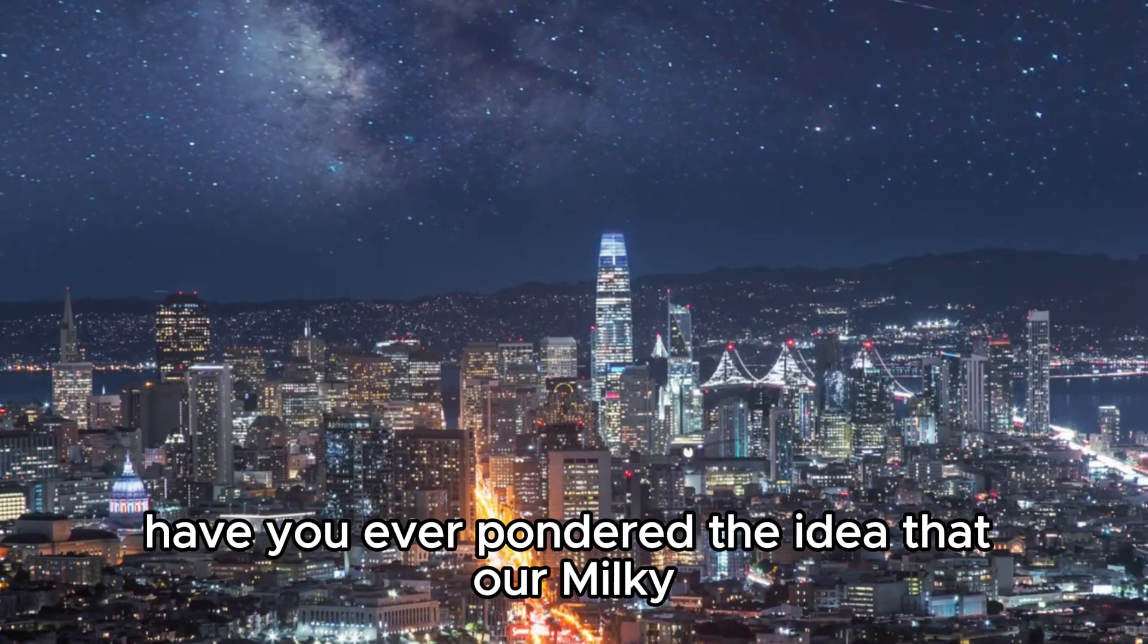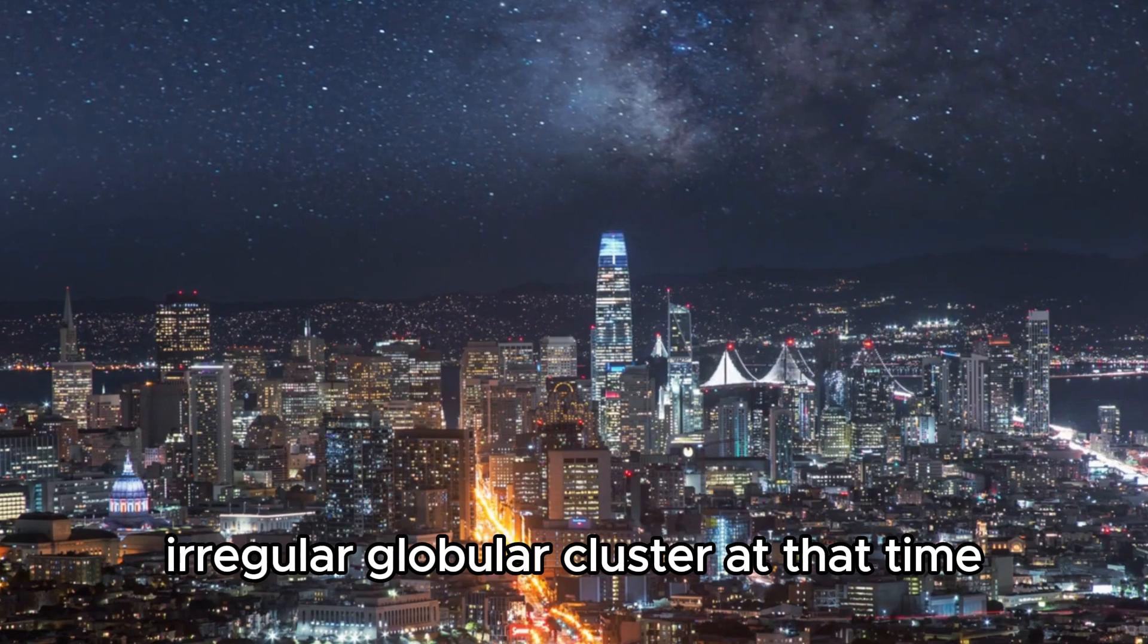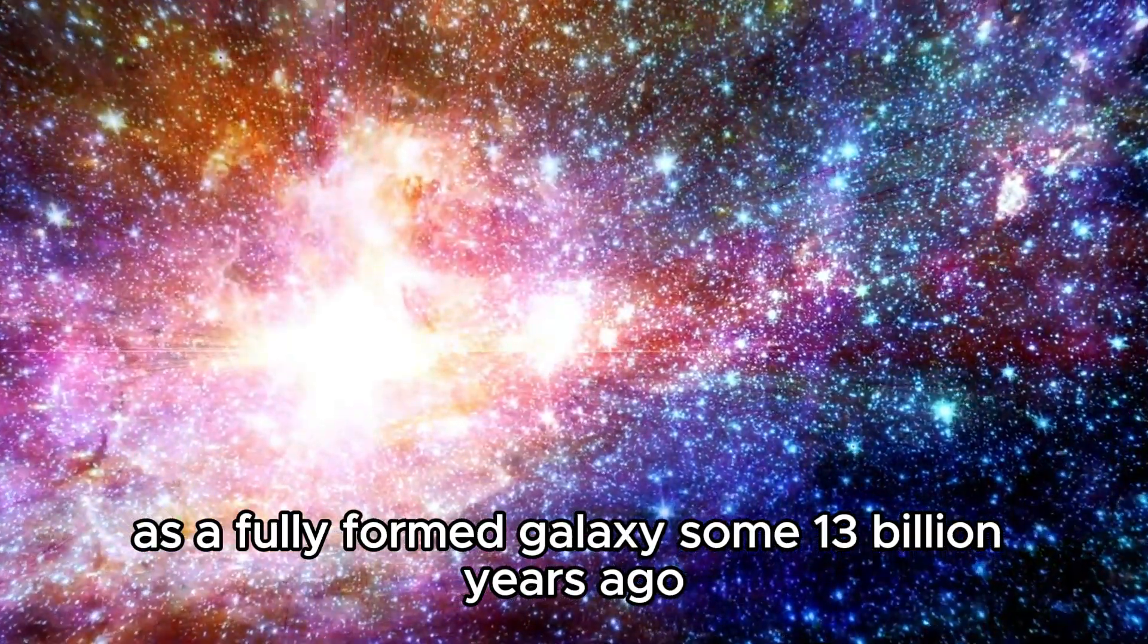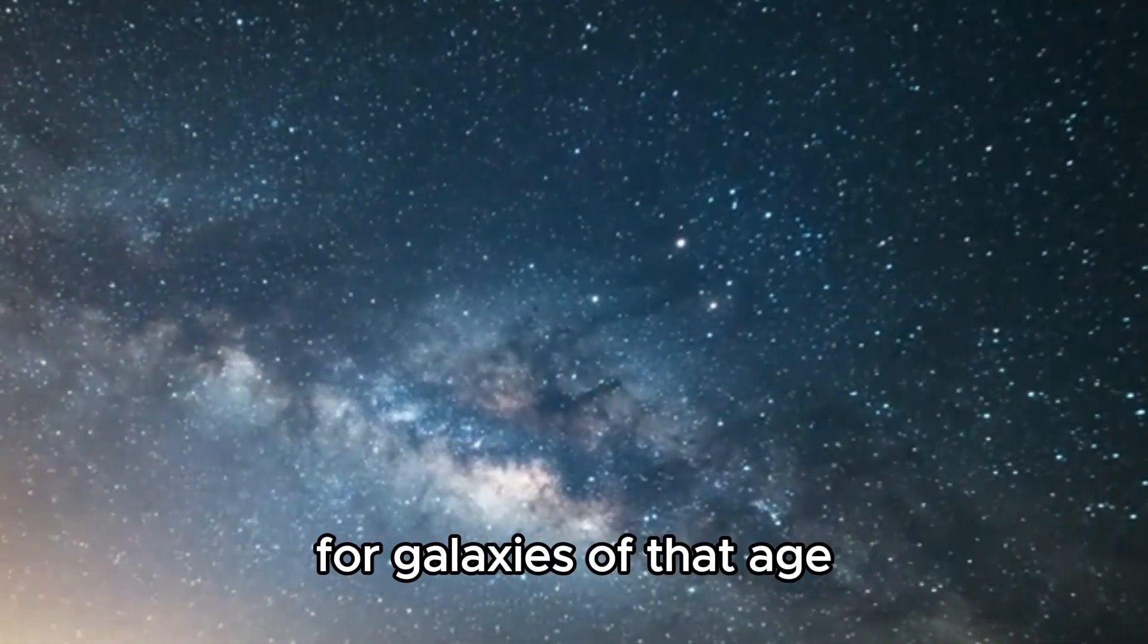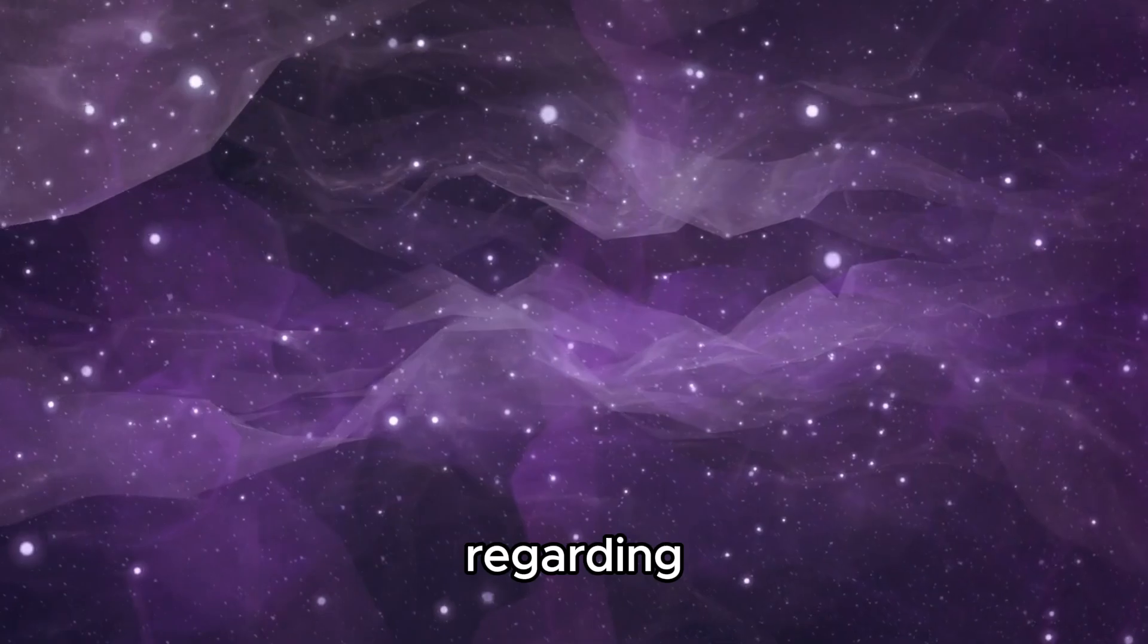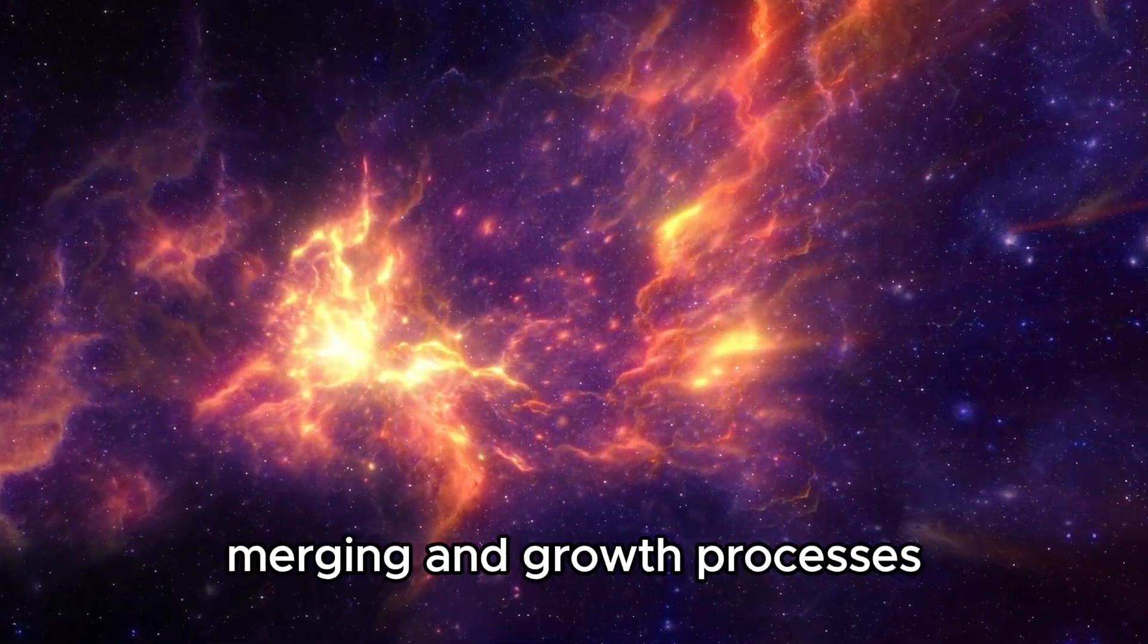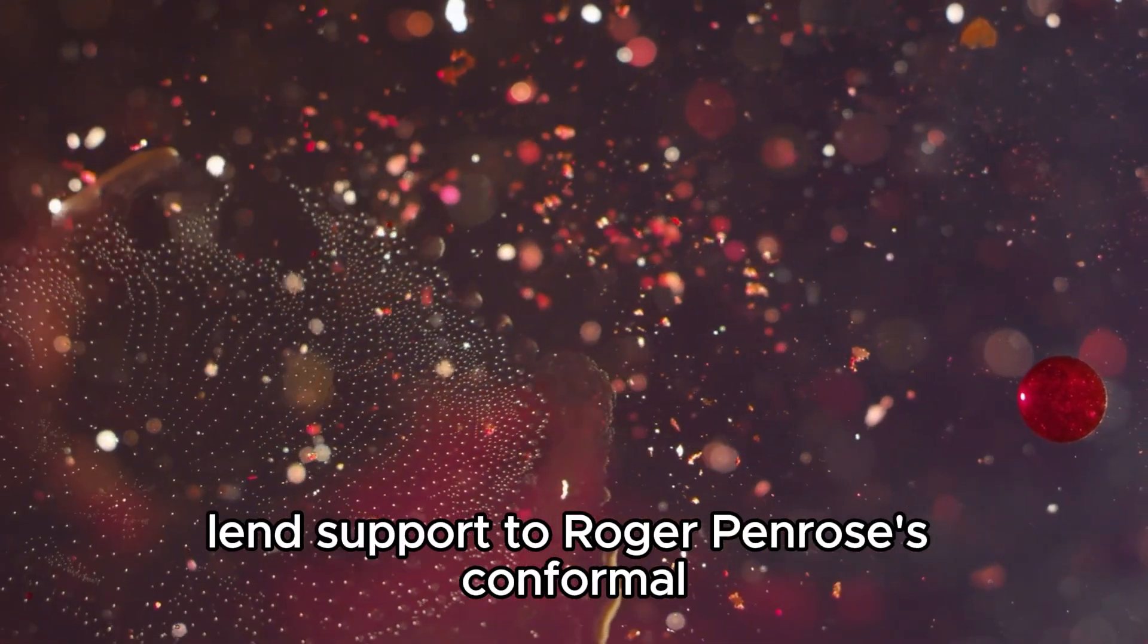Have you ever pondered that our Milky Way also existed in some form during the early universe? Perhaps our Milky Way is much older than previously believed. With an estimated stellar mass of approximately 3.9 billion solar masses, it's considerably larger than expected for galaxies of that age. However, the primary question revolves less around mass and more around shape. The shapes of galaxies are believed to evolve through intricate merging and growth processes spanning billions of years.